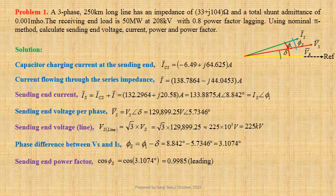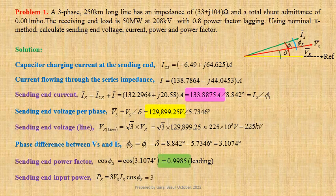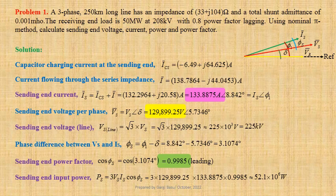Now we shall compute sending-end input power. PS equals 3 × VS × IS × cos φS. Using values we get 3 × 129,899.25 × 133.8875 × 0.9985, which is approximately equal to 52.1 × 10⁶ watts, that is 52.1 megawatts.